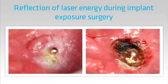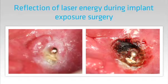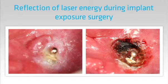One of the most powerful examples of using selective ablation is when we work around metallic dental implant components. In this case I am exposing an implant located in the middle of a large skin graft which sits on a reconstructed mandible.